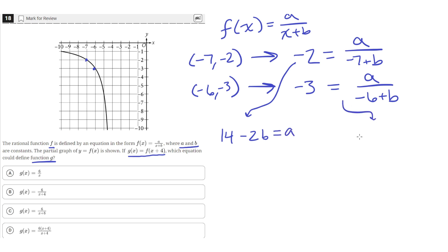For this equation, let's also multiply both sides by the denominator. Negative 3 times negative 6 equals 18. Negative 3 times b equals negative 3b, and this will equal a.